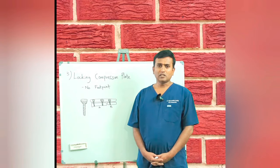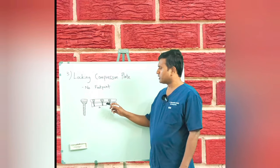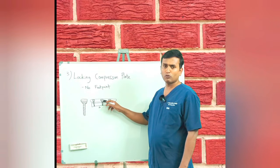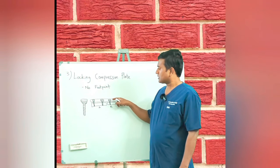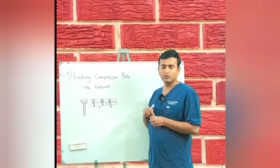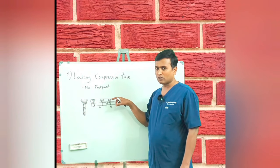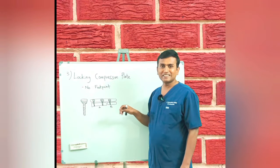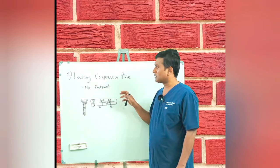With the Locking Compression Plate, implant failure is minimal or remote. We don't need to fix the plate directly onto the bone — we can leave a gap — so automatically there is no footprint developed on the periosteal region. The plate has serrations to fix the screw, and the screw head also has threads to lock onto the plate, so it acts as a single unit, and implant failure is not easily seen with the Locking Compression Plate.